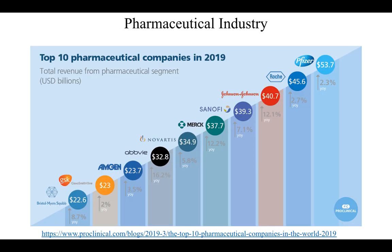Let's take a look at the pharmaceutical industry as an example. This figure shows the top 10 pharma companies in 2019 based on their revenue in billion dollars. As you can see, the total revenue of these 10 companies combined is roughly 350 billion dollars, which is insanely high and shows how important computational chemistry can be in this area, let alone others.